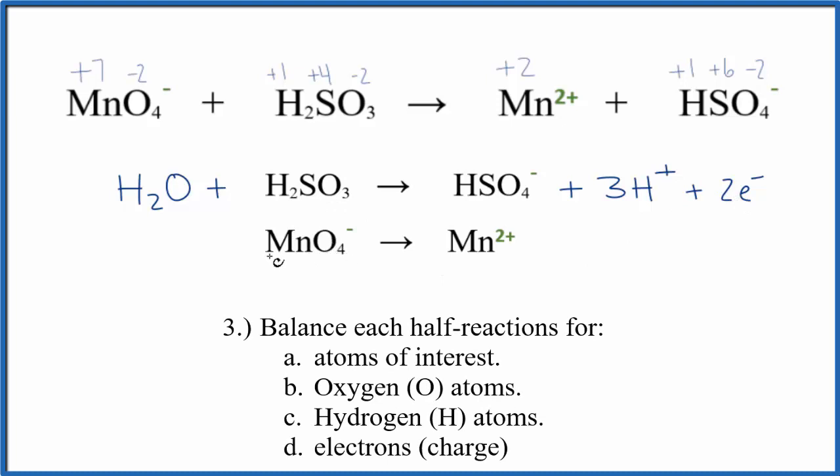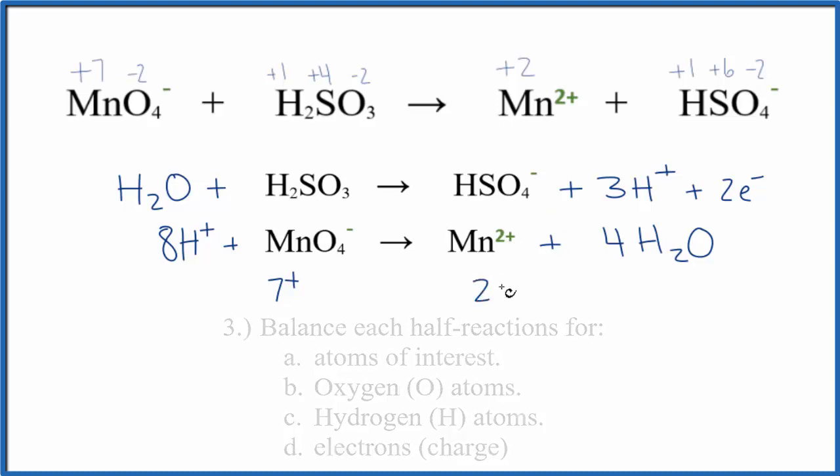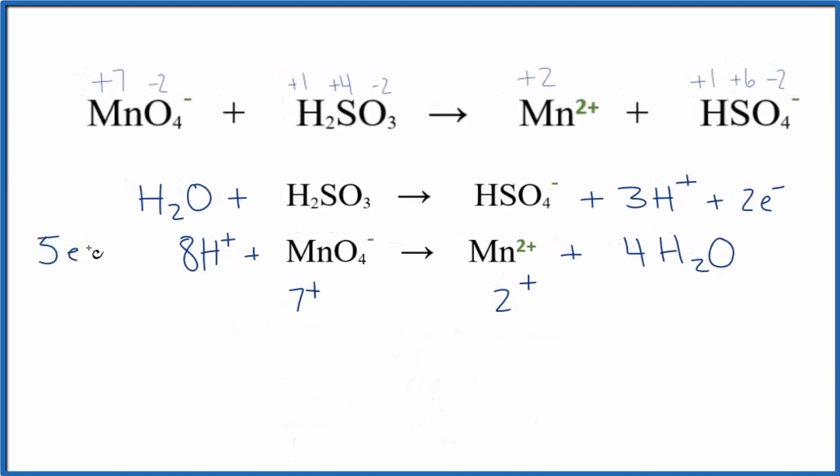Let's do the same thing for the manganese. The manganese is balanced. Now we can balance the oxygens by adding four waters over here. Now the oxygens are balanced but we have eight hydrogens so we add eight hydrogen ions. I can see I have eight plus and one minus, so overall I have a seven plus charge here. Over on this side I have two plus, so I need to add five negative charges here so that the seven plus is equal to the two plus. The charge is balanced. Again, if you look at the manganese, seven goes to plus two so we need those five electrons. So the half reactions are balanced.